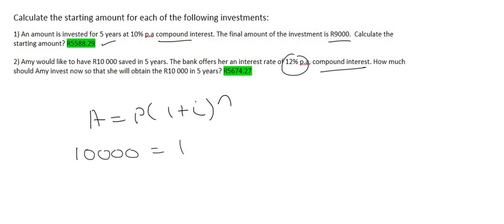We know that Amy would like to have 10,000 Rand, so that's the final amount. We don't know how much she's going to start off with, so we'll leave it as P. The interest rate is 12%, or 0.12, and it's also going to be a 5-year period.